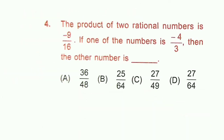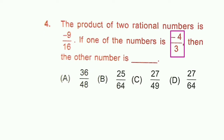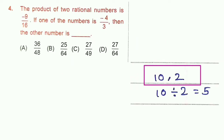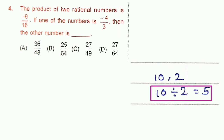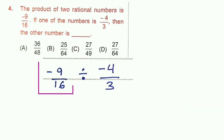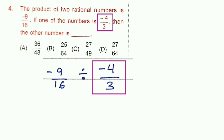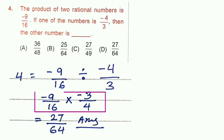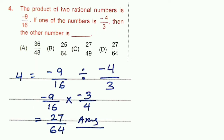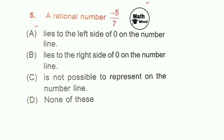Question 4: The product of two rational numbers is −9/16. If one number is −4/3, find the other. To find the other number, divide the product by the known number: (−9/16) ÷ (−4/3) = (−9/16) × (−3/4). Both numbers are negative, so their product is positive. Option D is correct.